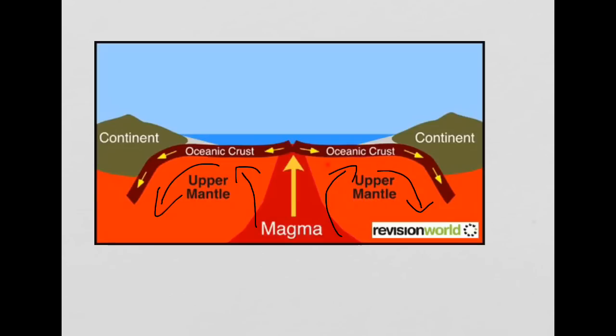These convection currents in this area at the oceanic crust drag the plates apart. This gap that's left in between gets filled by magma as it wells up to the surface.